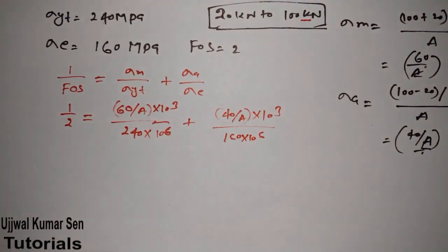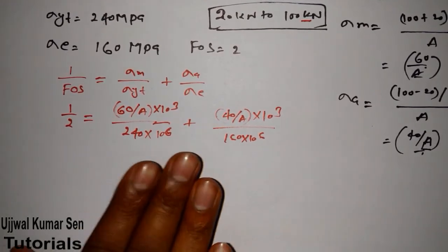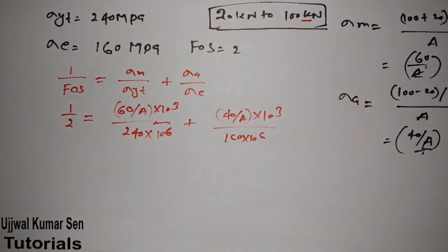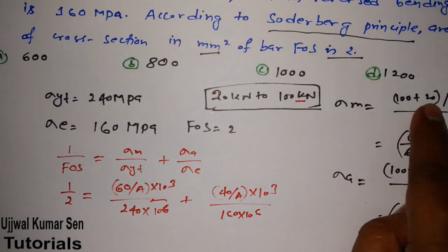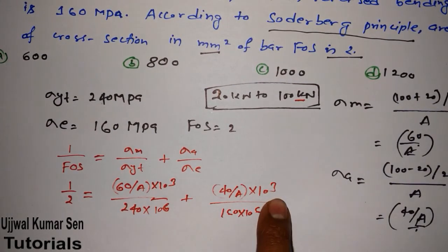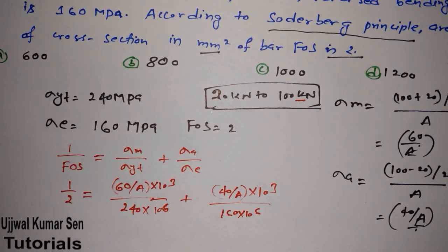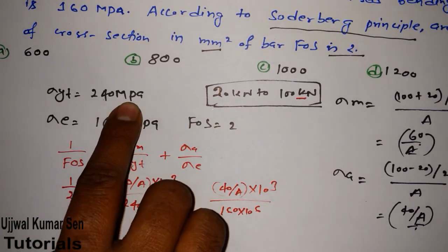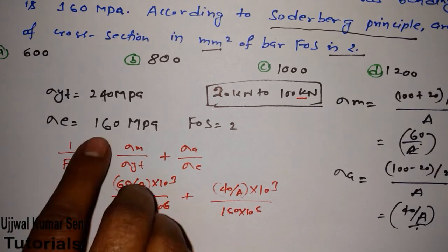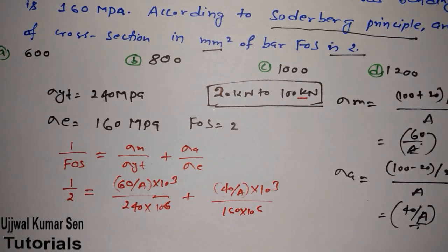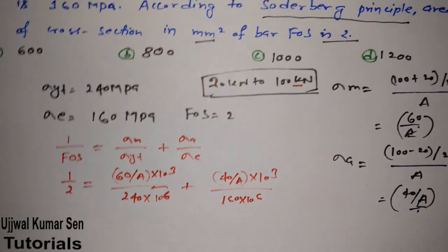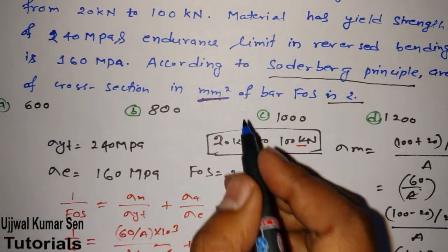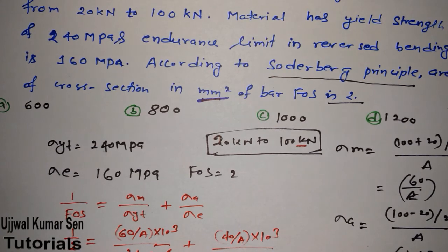We need to ensure all values are in SI units. The loads given in kilonewtons are already multiplied by 10³. FOS has no unit. 240 MPa = 240×10⁶ Pa and 160 MPa = 160×10⁶ Pa. We will first find area in meter square, then convert to mm square, since the question asks for mm square.